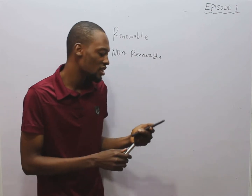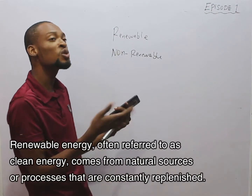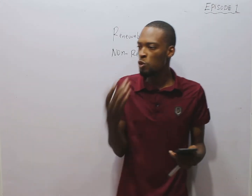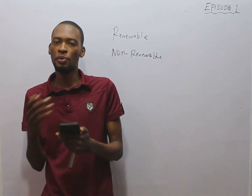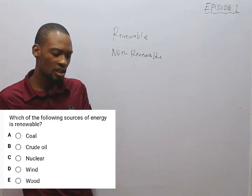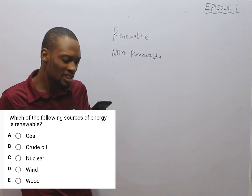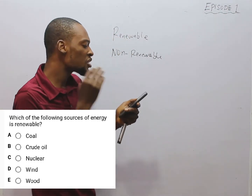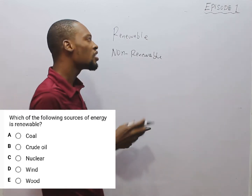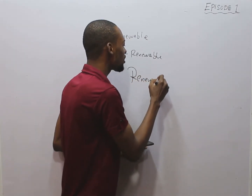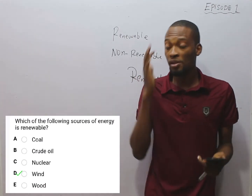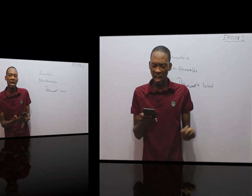Non-renewable energy sources are those that can be used up — you can finish them. Looking at the options: A is coal, B is coal fire, C is nuclear energy, D is wind, and E is wood. Out of these, the only renewable source of energy is wind. Wind doesn't finish — it keeps coming. It replenishes, so wind is the correct answer.